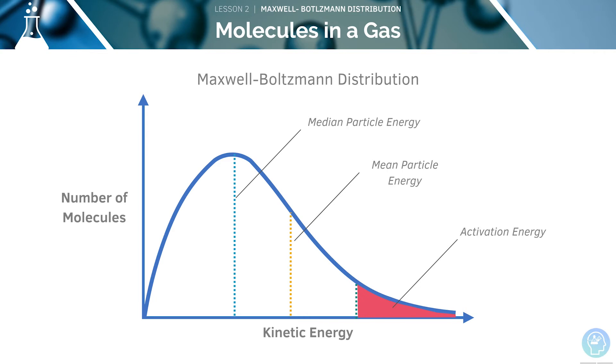This figure shows a Maxwell-Boltzmann distribution. You should be able to draw, label and interpret one yourself. Additionally, you should be able to describe what is happening at each stage of the plot. We'll run through it together in this video.